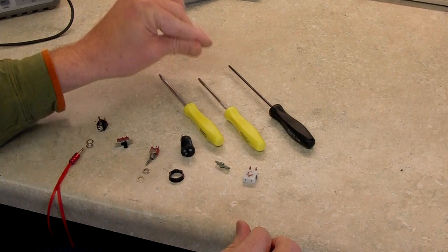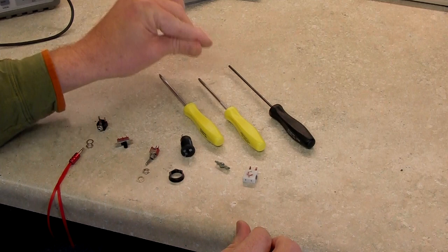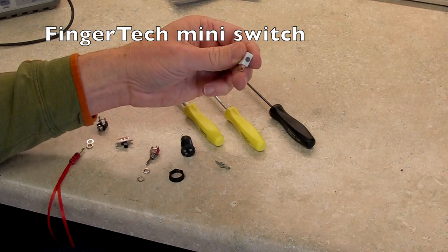And then sixth we have the FingerTech mini switch. This is a nylon bodied screw switch that's used a lot in the robot world and which I thought was really solid and secure.